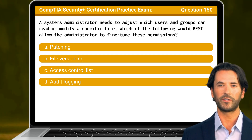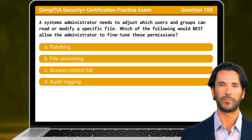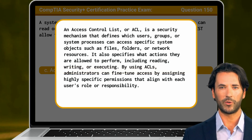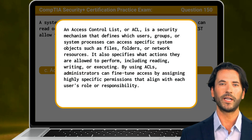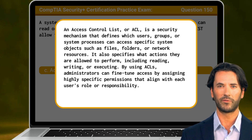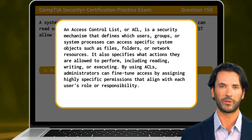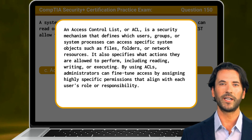Question 150. A systems administrator needs to adjust which users and groups can read or modify a specific file. Which of the following would best allow the administrator to fine-tune these permissions? The answer is C: Access Control List. An Access Control List, or ACL, is a security mechanism that defines which users, groups, or system processes can access specific system objects such as files, folders, or network resources. It also specifies what actions they are allowed to perform, including reading, writing, or executing. By using ACLs, administrators can fine-tune access by assigning highly specific permissions that align with each user's role or responsibility.